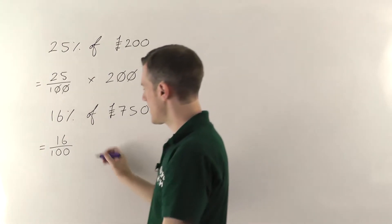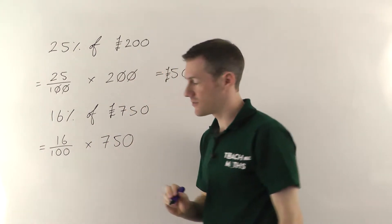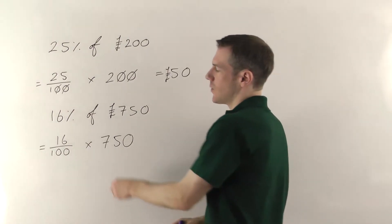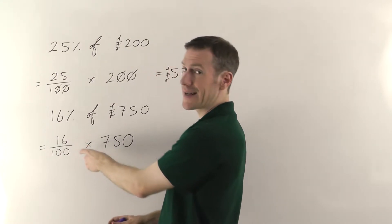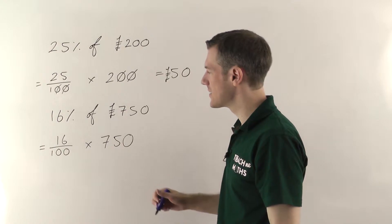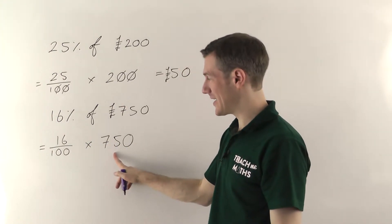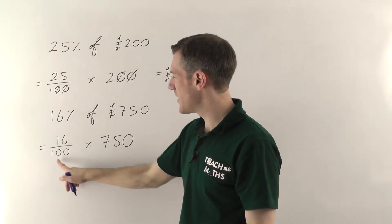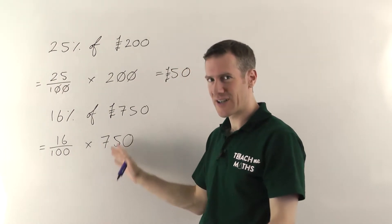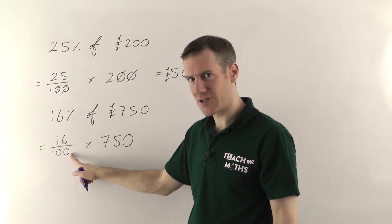So again convert this percentage into a fraction out of 100. Of means times in maths and we're going to times in this case by 750. Now there's various ways you could do this. With any fraction you can always cancel it down and I think that might be the easiest way to approach this in this case. Doing 16 times 750 is not going to be that easy. And dividing by 100, well you can cancel one of the zeros but then you've still got 75 over 10. You're not going to get a whole number, it gets a little bit tricky. I'm going to cancel this fraction down first and just see what we get.